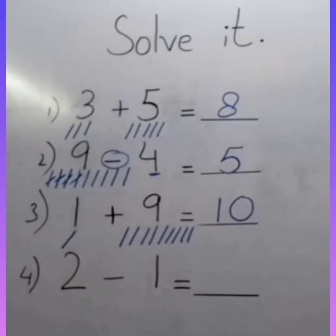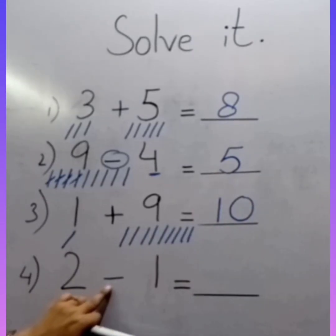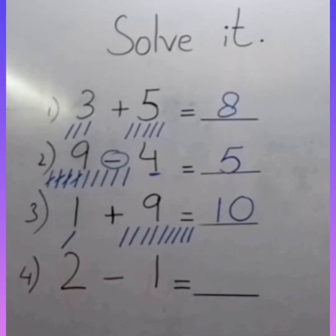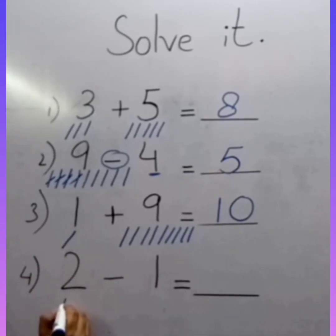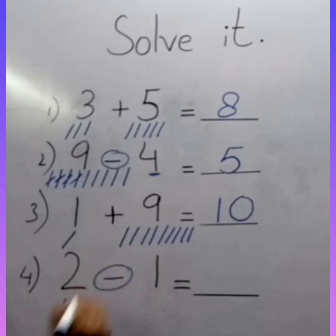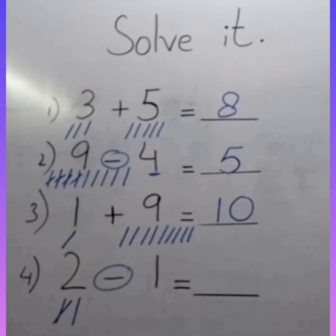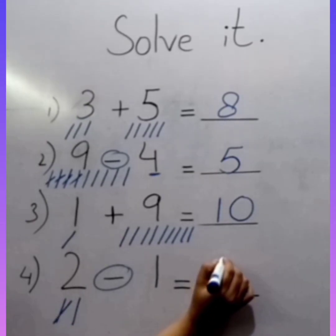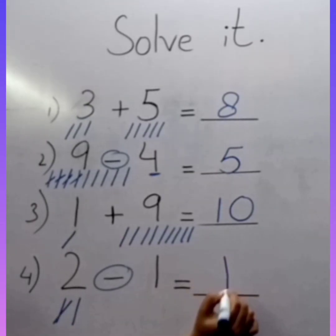Next sum: 2 minus 1. Here is the sign of subtraction. Draw 2 lines, then remove 1. How many remaining? Here is 1 remaining, so the answer is 1.